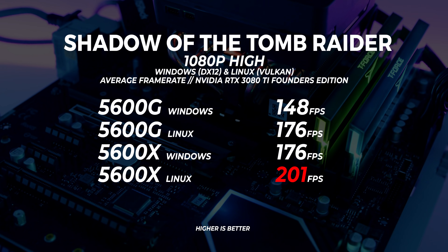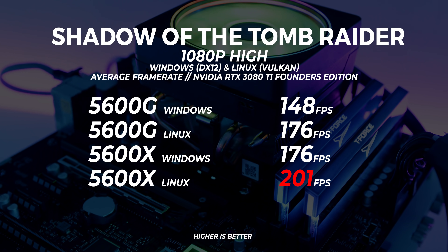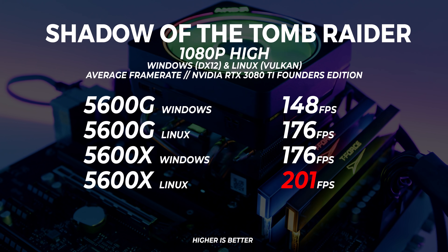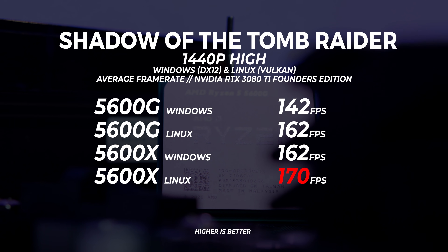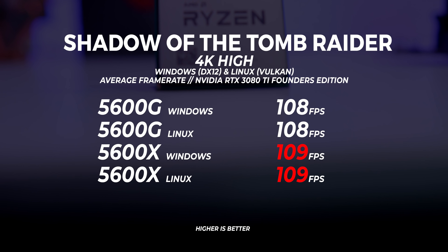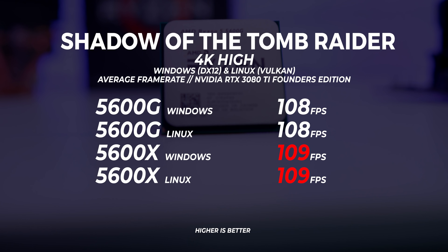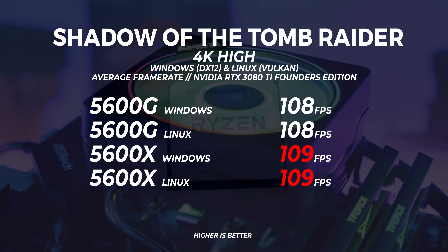Now we know how the 5600G compares to the 11600K in terms of integrated GPU performance. But what about how it compares to the 5600X with a discrete GPU in both Windows and Linux? In Shadow of the Tomb Raider at 1080p high, the 5600X easily outpaces the 5600G in Linux performance — this is traditionally the case with Shadow of the Tomb Raider, where you see better Linux performance than Windows. At 1440p high the same thing is echoed, with the 5600X outpacing the 5600G. At 4K, both Windows and Linux show similar performance, but the 5600X does beat the 5600G by a single frame.